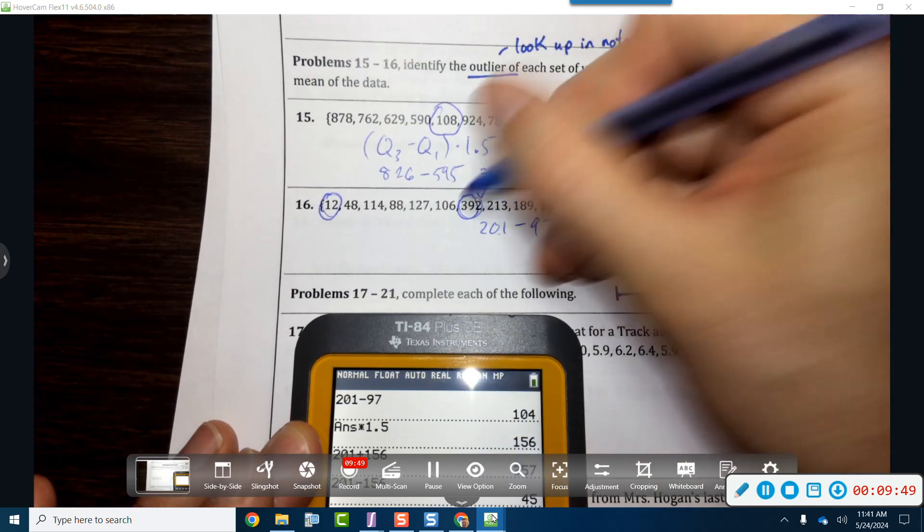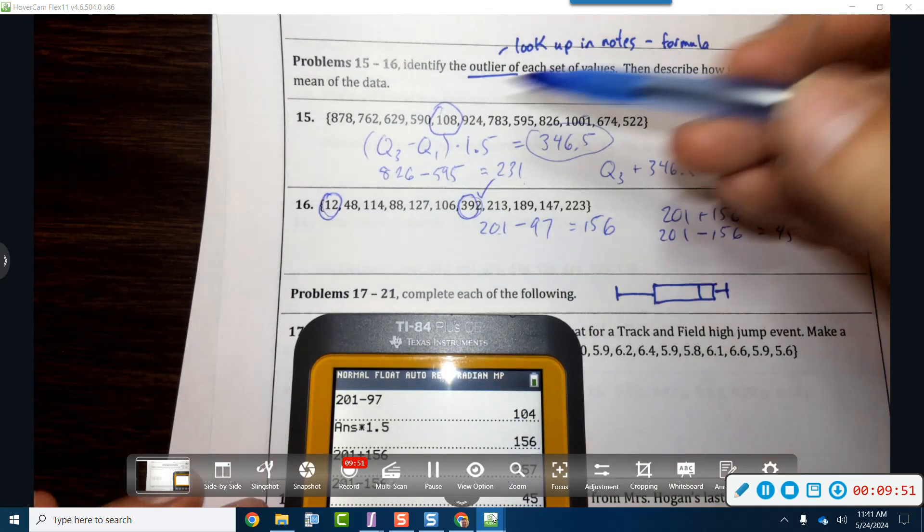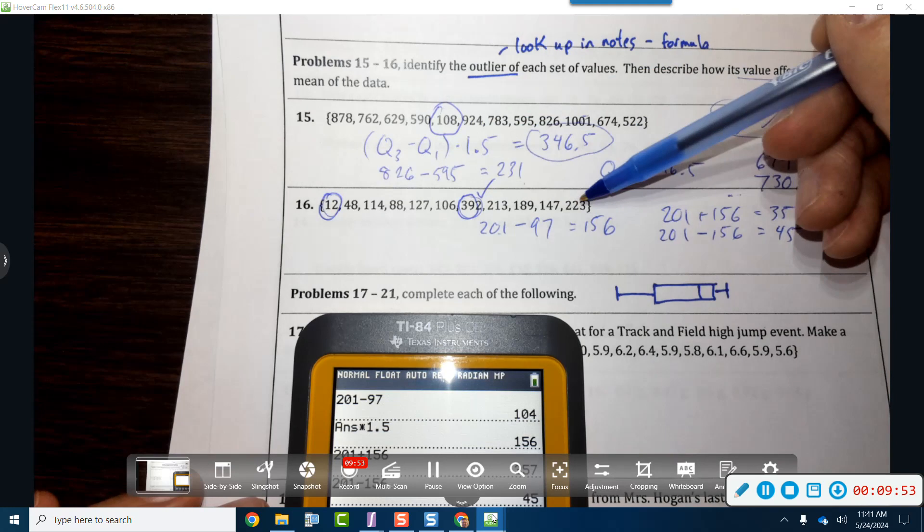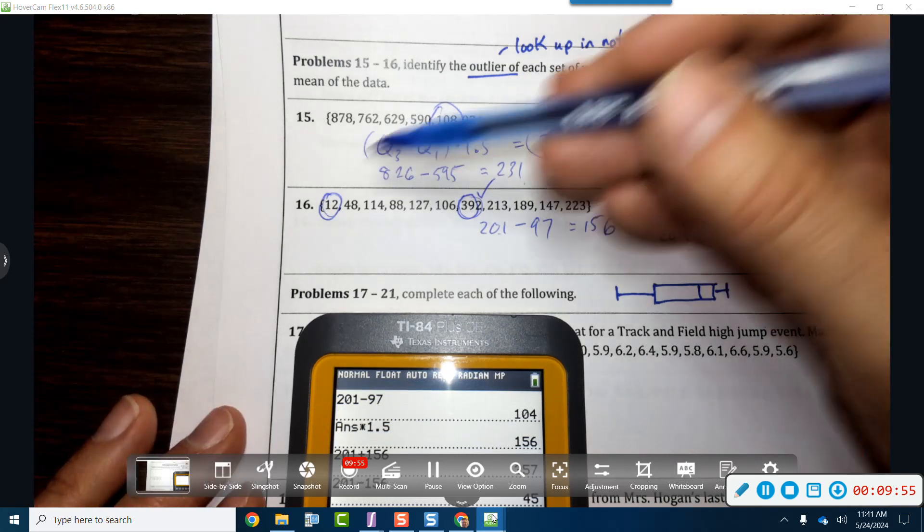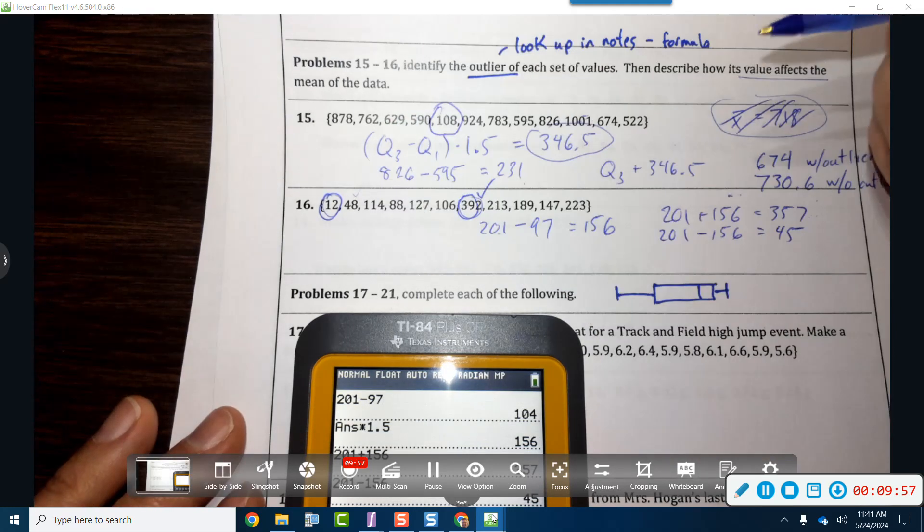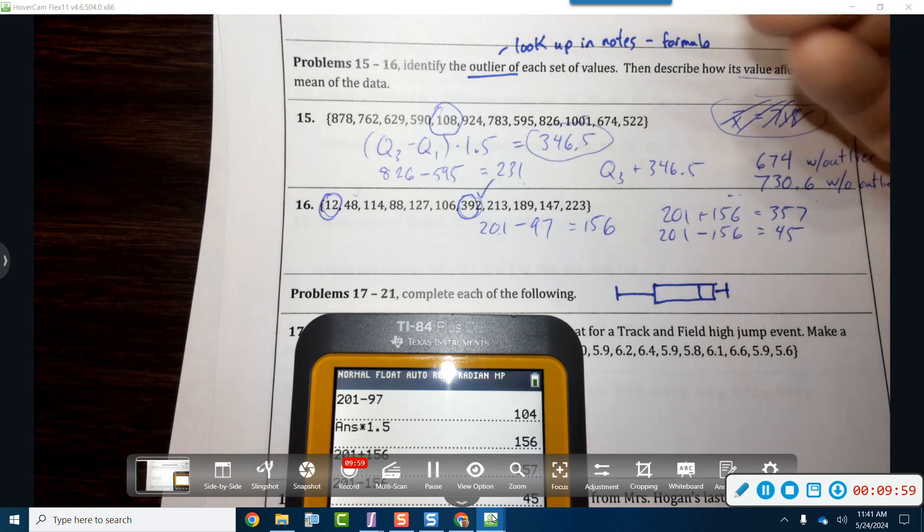So this guy is check yes. And then 201 minus 156, that's 45. So it looks like we have two outliers here. We've got a 12 and we've got the 392. Are there any other ones, anything over 357? Nope. And anything less than 45? Nope. So he's right there at the border, but that's okay. So it looks like we got two outliers.